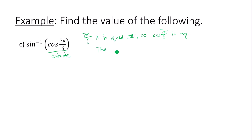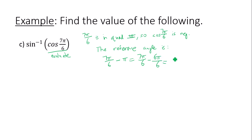I need to find a reference angle. For an angle in quadrant three, I move it to quadrant one by subtracting pi radians. So my reference angle is seven pi over six minus pi, which is seven pi over six minus six pi over six, giving pi over six. So the expression is actually sine inverse of cosine of pi over six — we'll be throwing a negative sign in there shortly. What is cosine of pi over six?